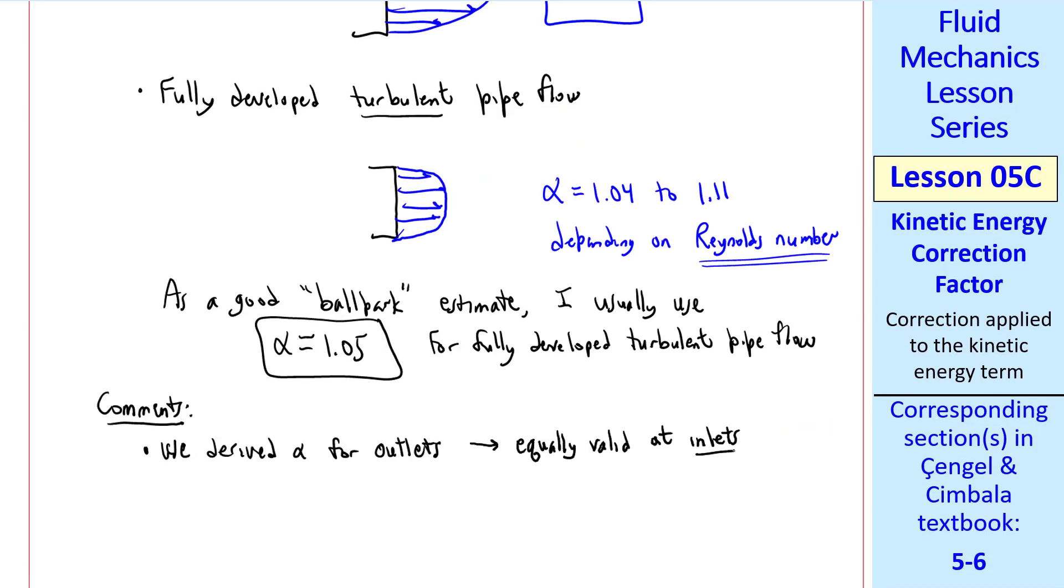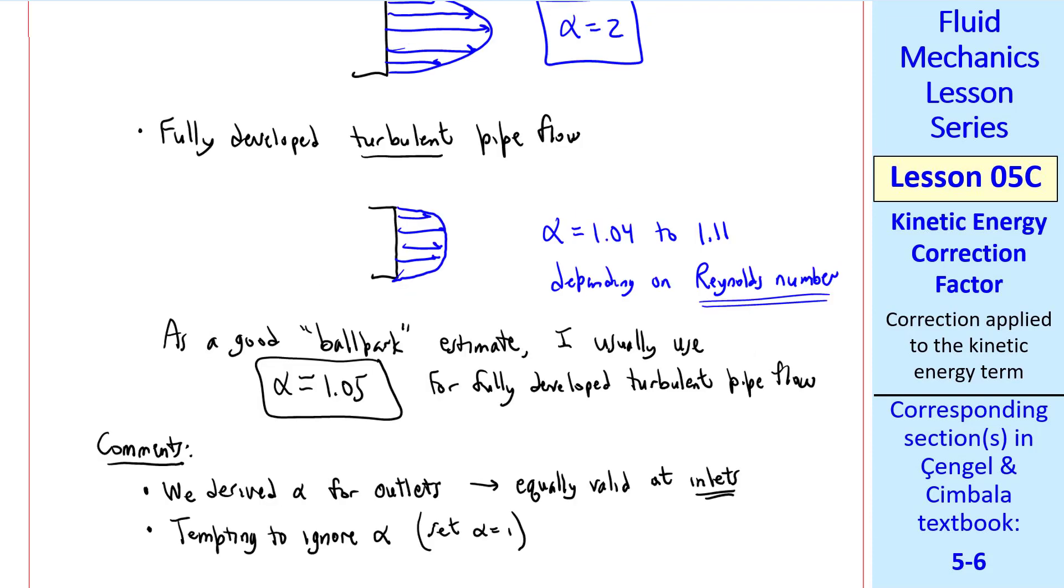A few comments, we derived α for outlets, but it's equally valid with the same equation at inlets. It's tempting to ignore α, which means setting α equal to 1, so that you're back to our SSSF equation from the previous lesson.